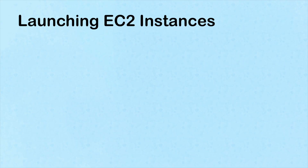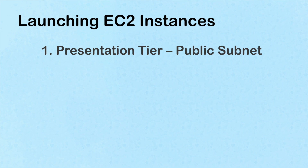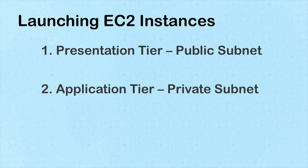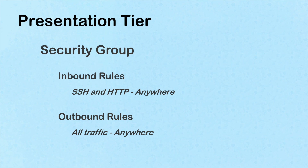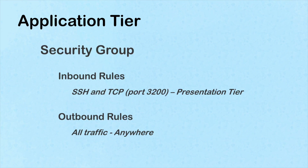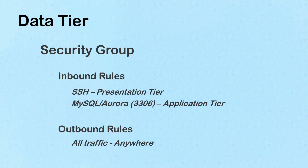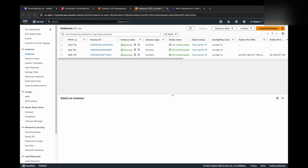With our VPC in place, let's deploy our EC2 instances. We'll launch three EC2 instances: one for our presentation tier in the public subnet, one for our application tier in a private subnet, and one for our data tier in the remaining private subnet. The presentation tier instance will host the React application. For security group inbound rules, we'll allow SSH and HTTP inbound traffic from anywhere. The application tier will host our Node.js backend — we'll permit SSH access and inbound traffic on port 3200 from the presentation tier. The data tier will host our MySQL database, with inbound traffic restricted to SSH from the presentation tier and MySQL port 3306 from the application tier.